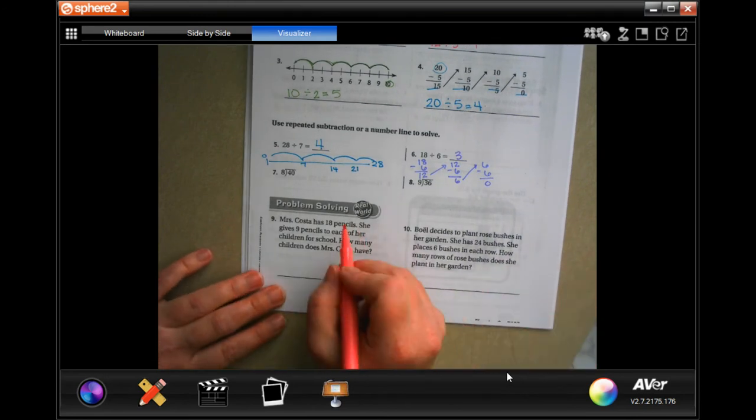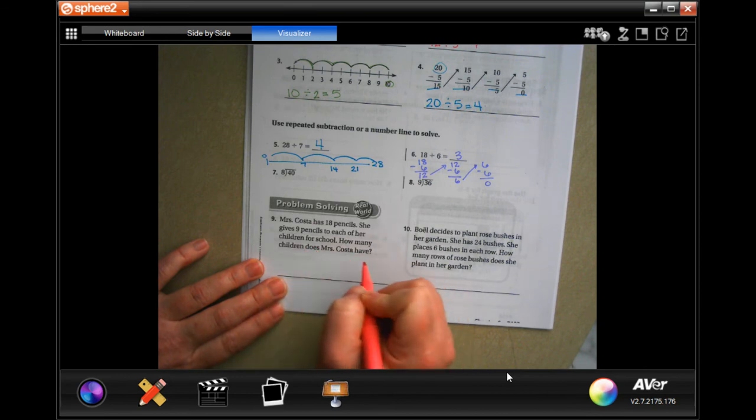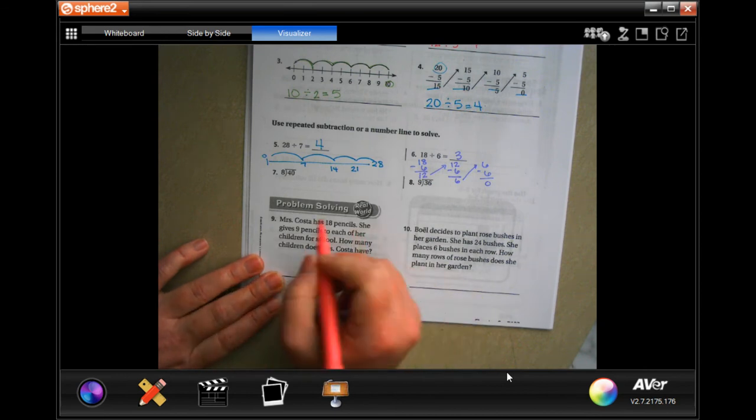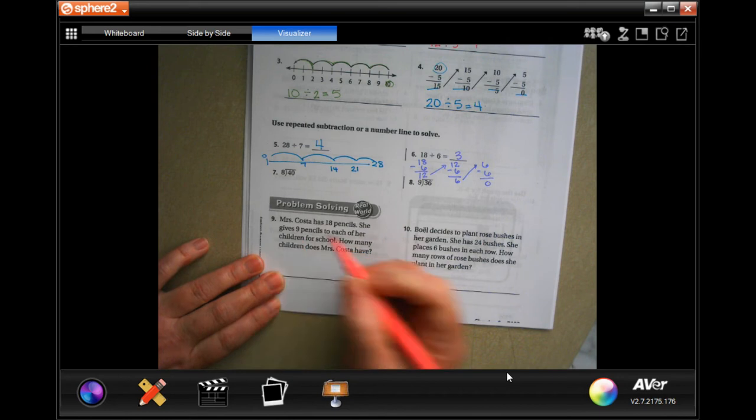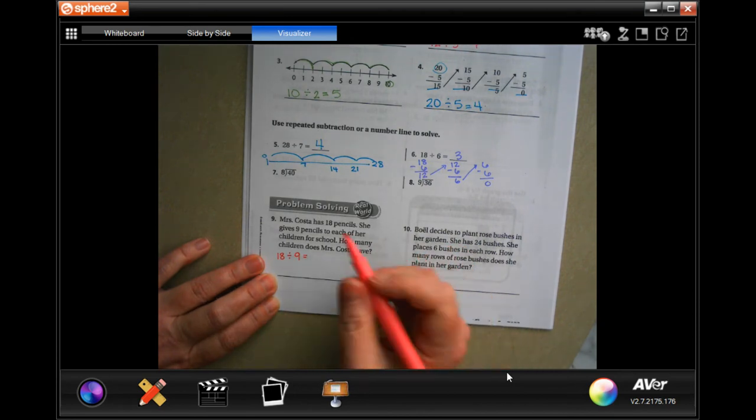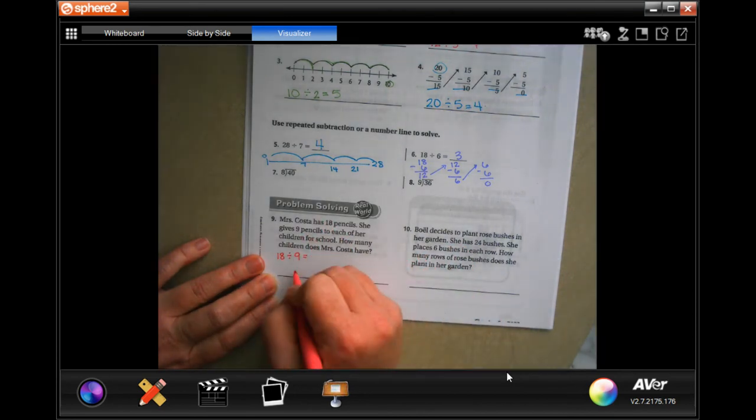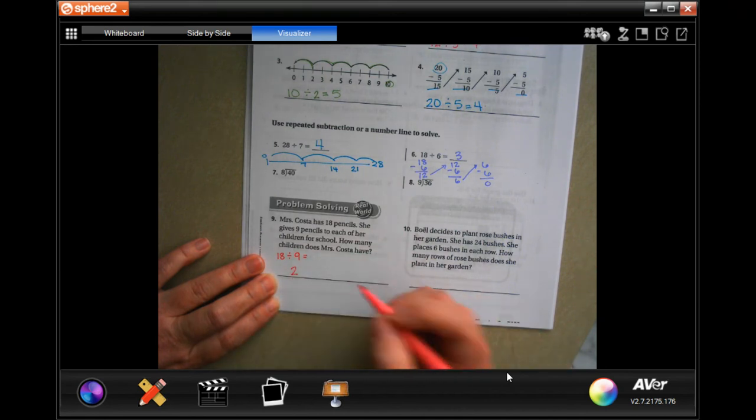Mrs. Costa has 18 pencils. She gives 9 pencils to each of her children for school. How many children does Mrs. Costa have? Well, 18 divided by 9... I'm also going to think 9 times what is 18? That's 2, so two children.